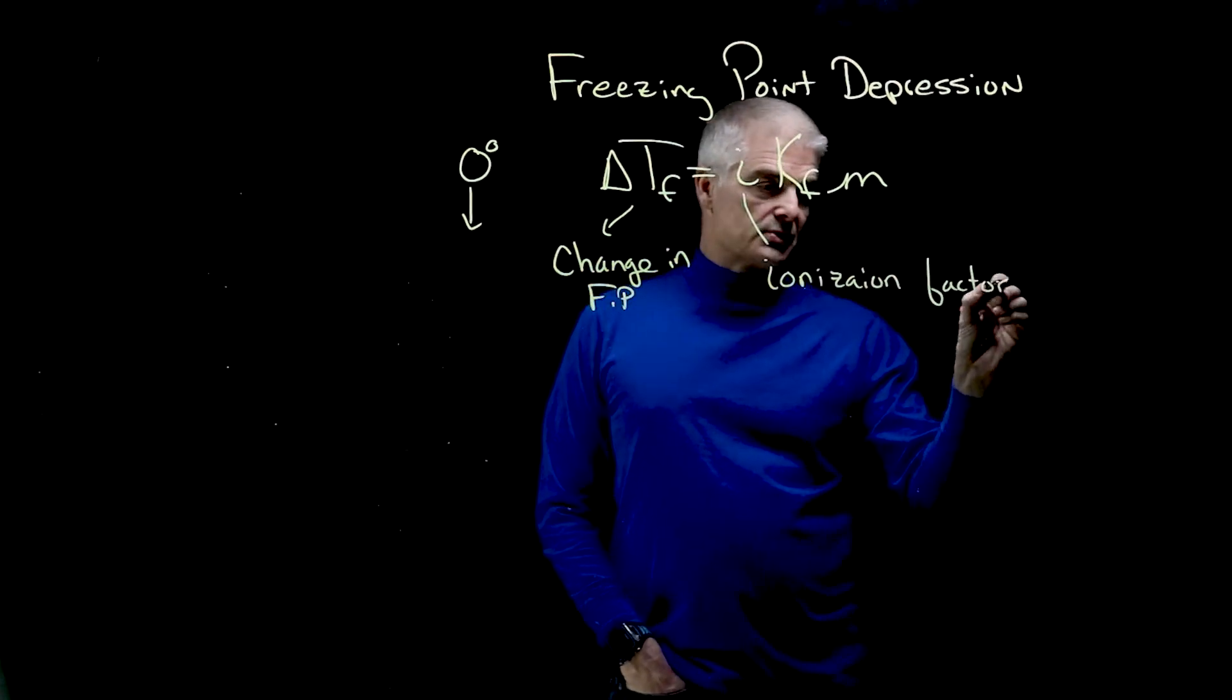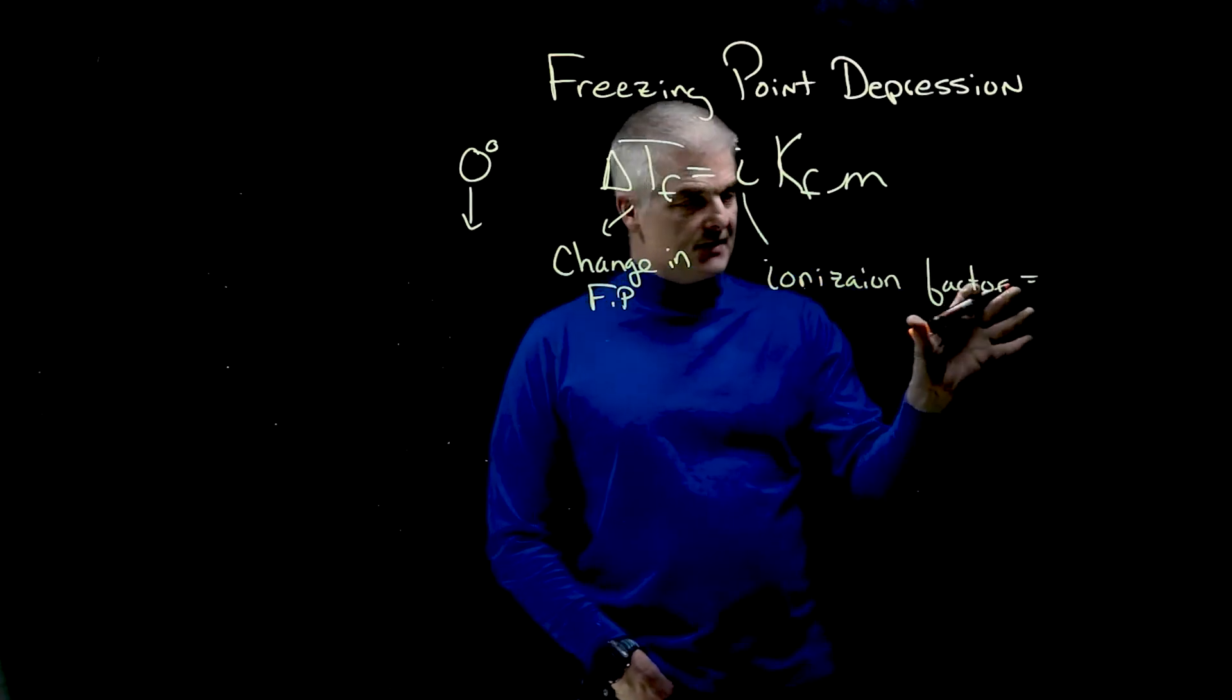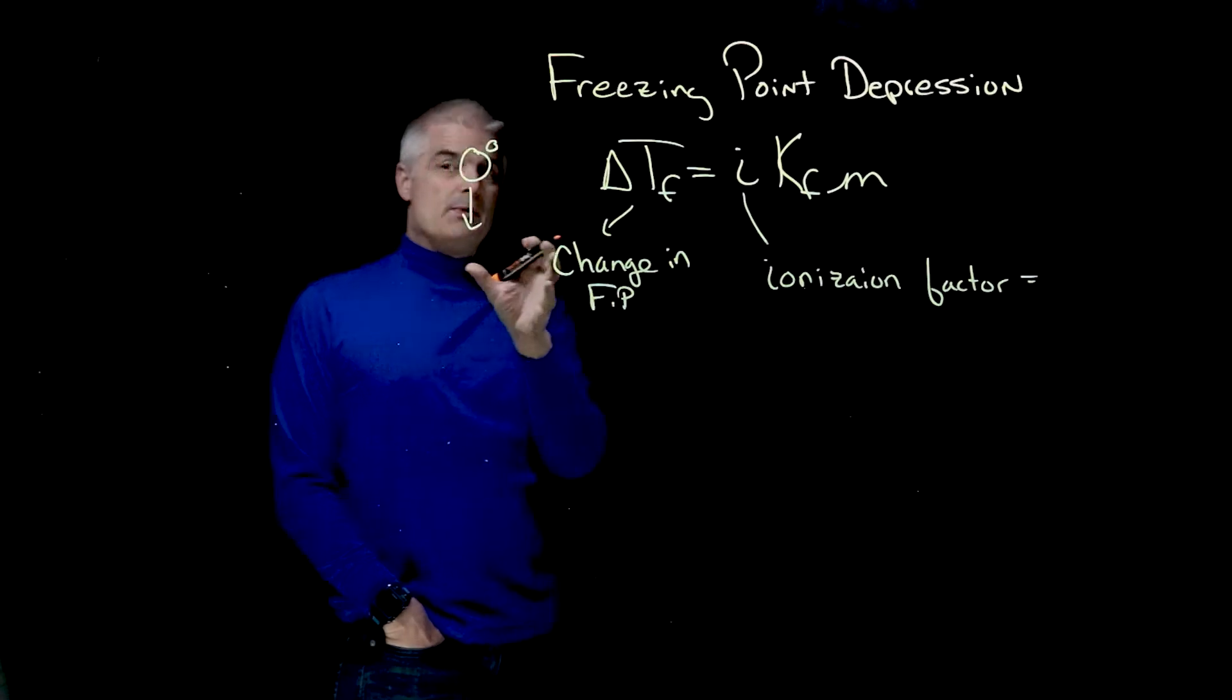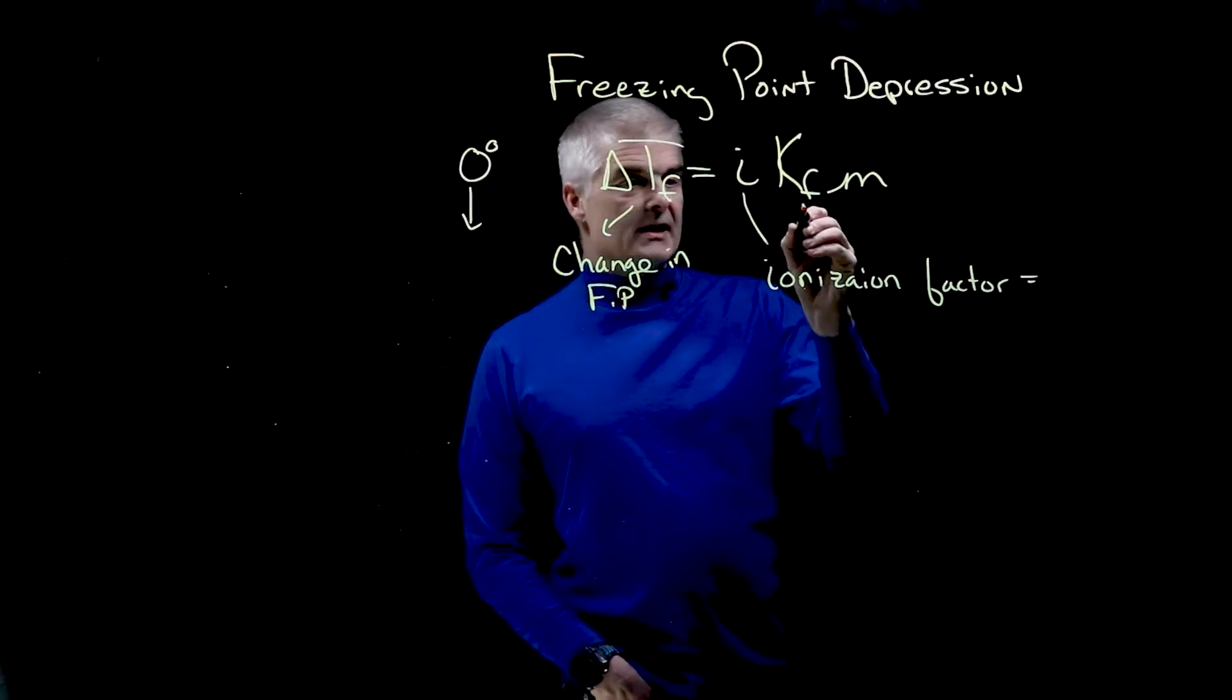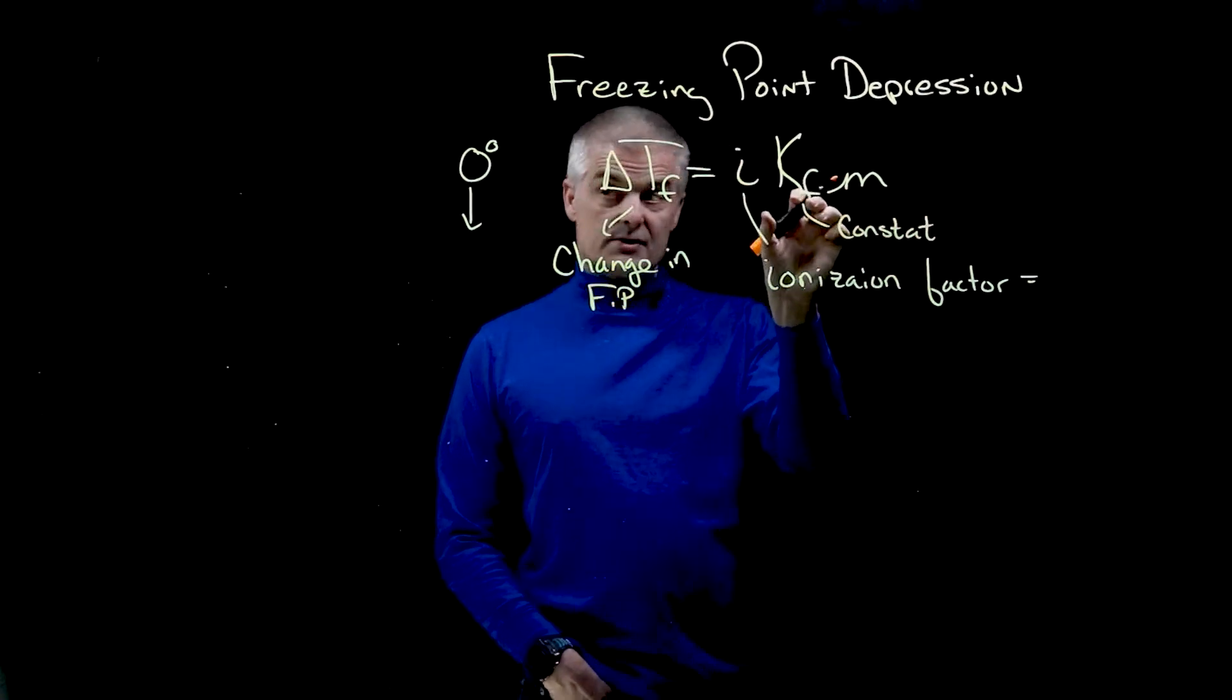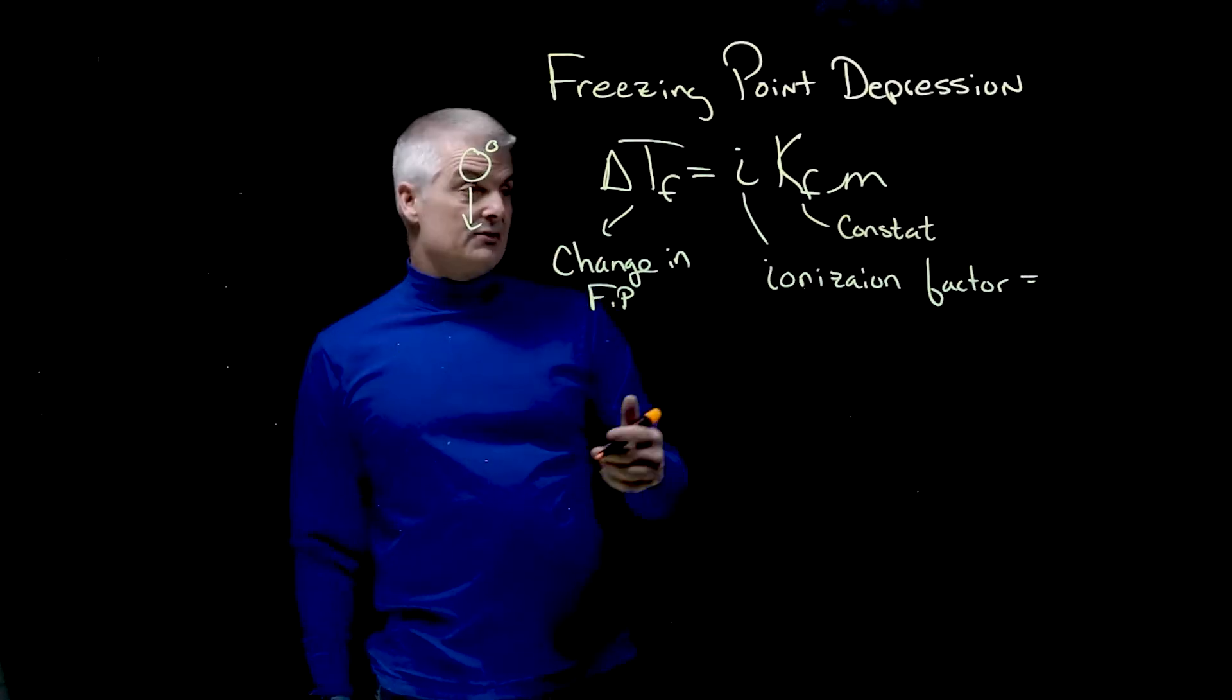You might read in your books it's sometimes called the Van't Hoff factor. This depends on how much it ionizes. Remember a colligative property depends on how much of something is dissolved. KF is a constant that you would get on a table. The constant is different for water, different for benzene, different for any kind of solvent.